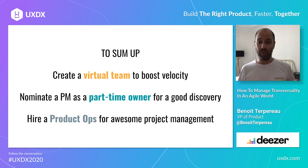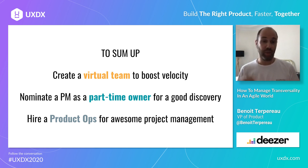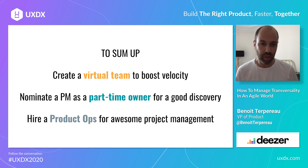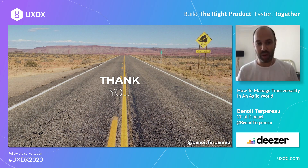So to sum up: when you need to push a transversal topic or global priority, I've given you three possible solutions to try. First, create a virtual team to really boost velocity. Then, nominate a PM as a part-time owner for good discovery and product management. Or, hire a product ops for awesome project management. With that, thank you very much for having me — it was really cool to be with you, and I'd be glad to talk to you either during this event or afterward online. Thank you very much. Bye-bye.